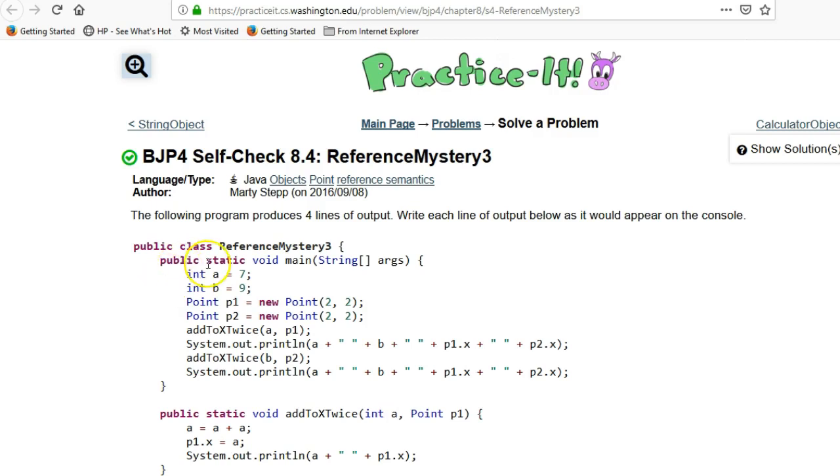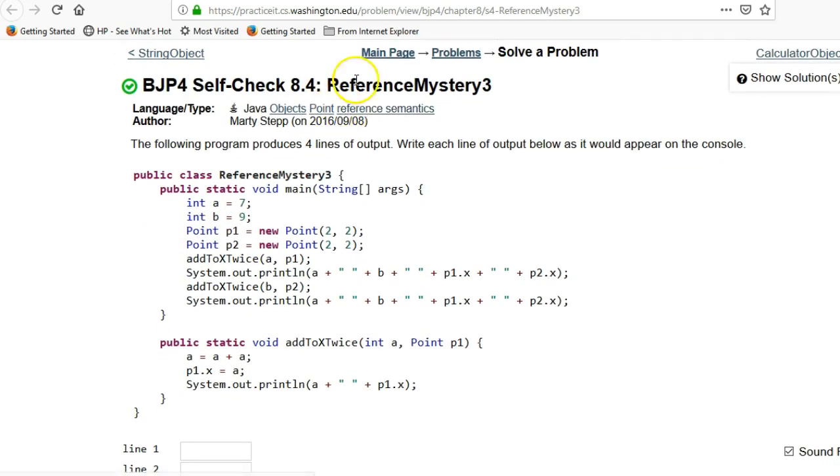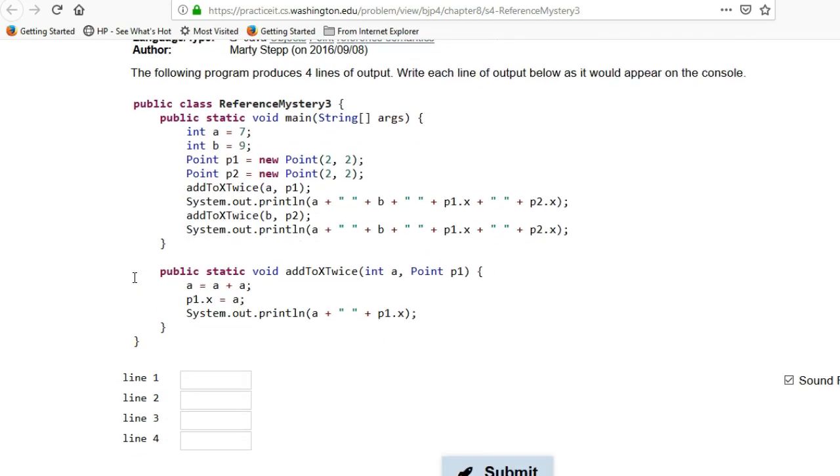So the point of this problem is, as the name implies, passing by reference. We covered a little bit of this in Chapter 7 with arrays. When you pass an integer, for example here passing this integer int a, anything you do inside the method is local to this method.